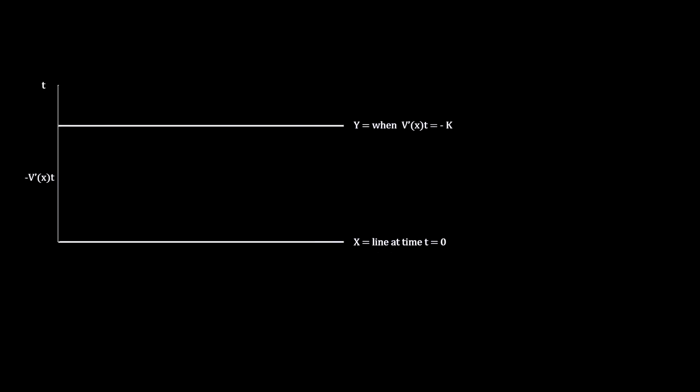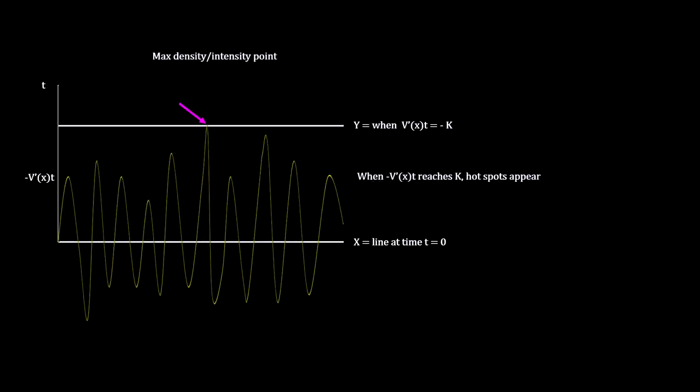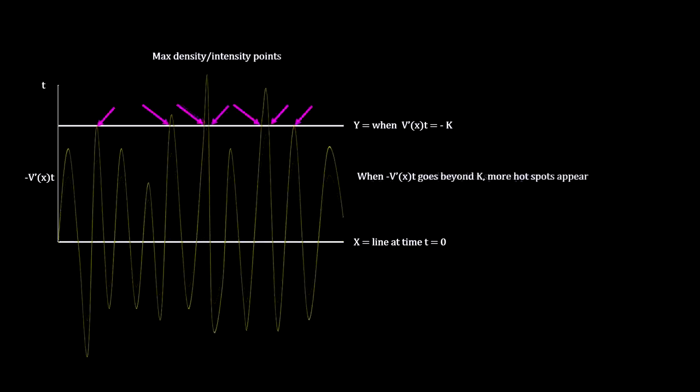Here's a plot of the rate of change in velocity with respect to location on the x-axis times time. Naturally, we get a very small curve when time is small. But as time goes on, the deviations grow. When they reach the critical time and beyond, we get hotspots.